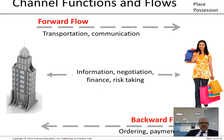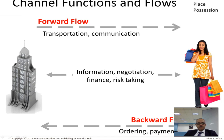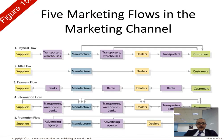We've got channel functions and flow — a forward flow and a backward flow. Your company provides transportation and communication to the customer; the customer learns about your products and services. Then there's a back flow where orders, payments, and money return. The five marketing flows are: physical, title, payment, information, and promotion.